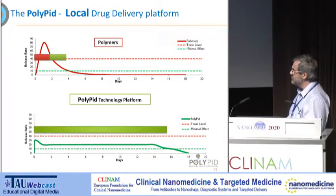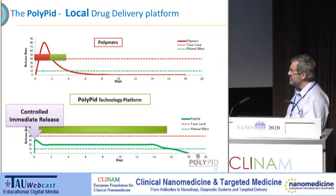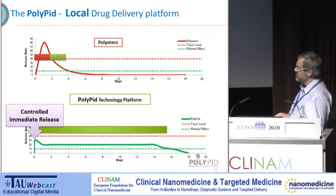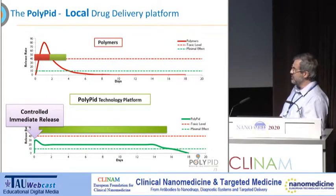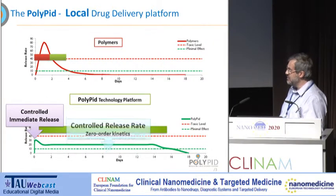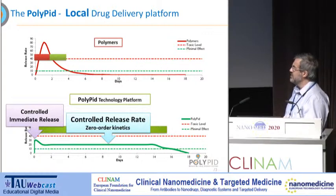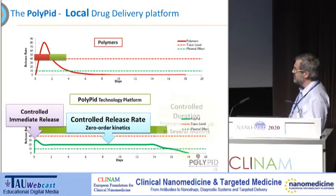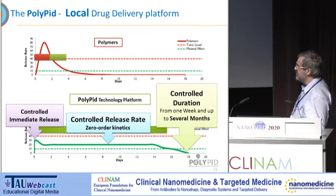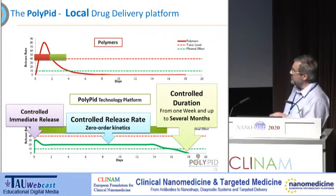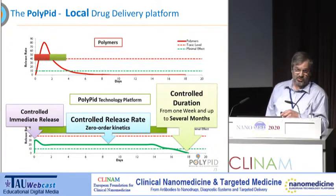With Polipid technology, we prefer to control the immediate release initially, then to control also the release rate — preferably zero-order kinetics, meaning constant release over time — and then also to control duration.